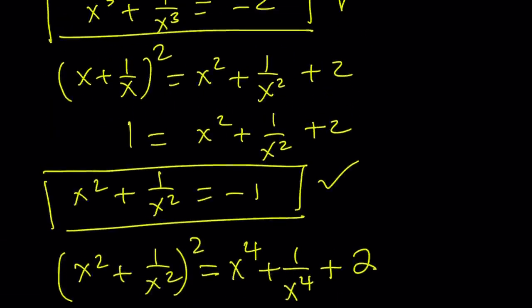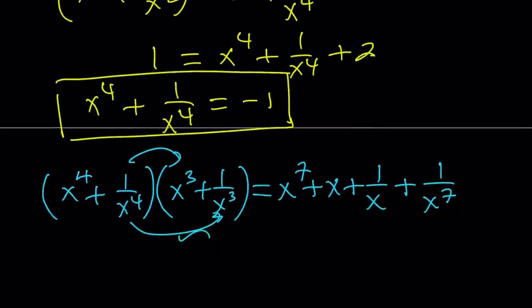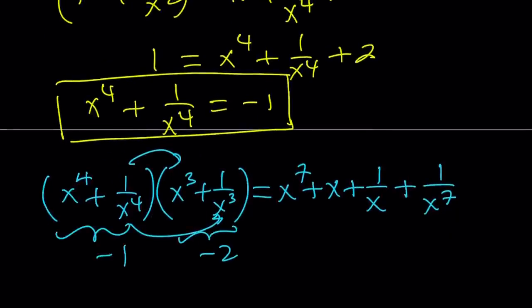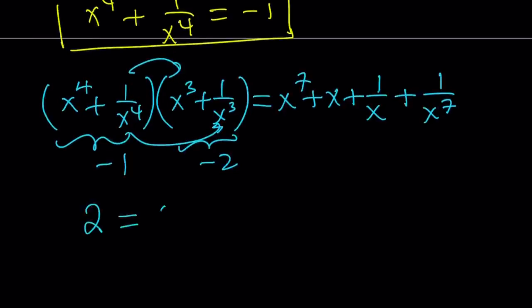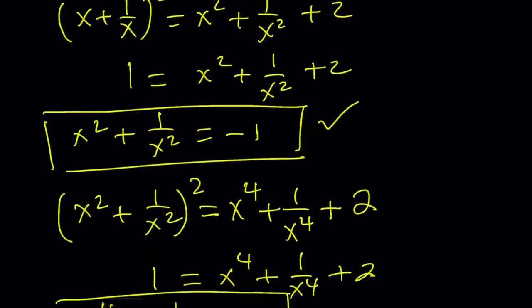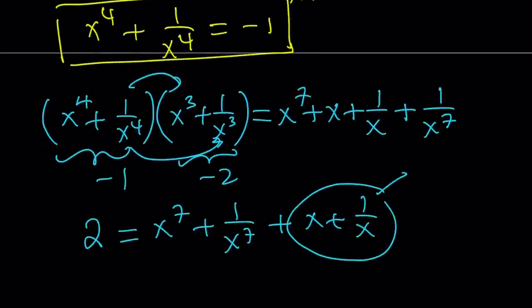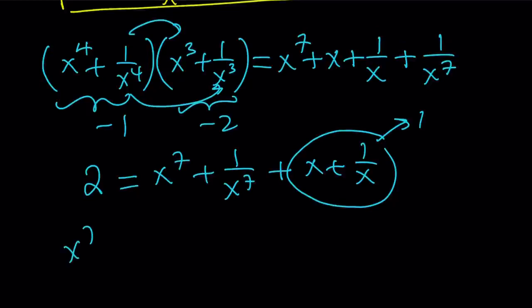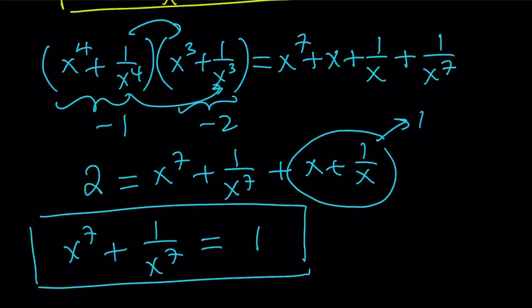Now, remember, x to the 3rd plus 1 over x to the 3rd is negative 2. So this is negative 2. And this is negative 1. The product is positive 2. So we're going to get 2 equals x to the 7th plus 1 over x to the 7th plus x plus 1 over x. But x plus 1 over x equals 1, so I can just replace it with 1. X to the 7th plus 1 over x to the 7th from here is just going to be 1. That's interesting. We had the sum x plus 1 over x equals 1. We raised both to the 7th power and added them again, but we still got the same answer.